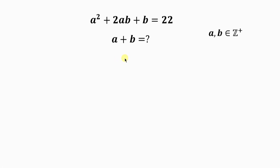What's going on everybody? Welcome back to my YouTube channel. Let's solve this math question that says: find the values of a plus b, given that a squared plus 2ab plus b is equal to 22. We should know that a and b are both positive integers.